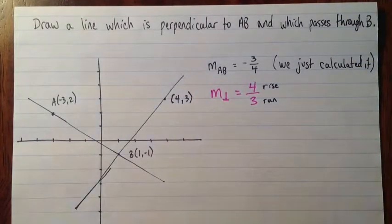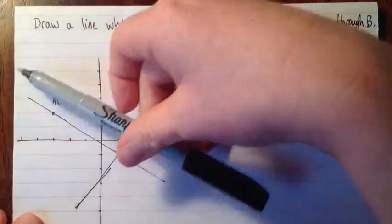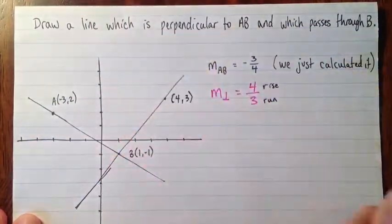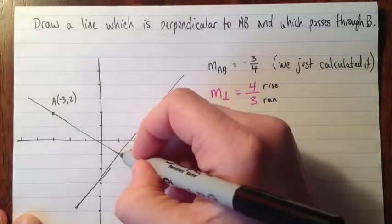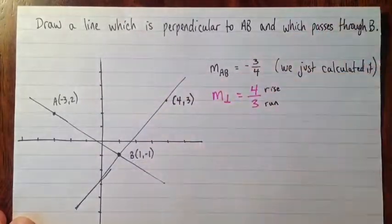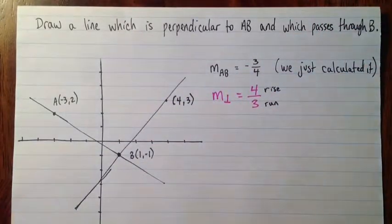All right. So just to review, if you want to draw a line that's parallel or perpendicular to a certain line, you'll find the slope of the first line, and then decide what the slope of the second line should be. It's the same if it's parallel, or the negative reciprocal if it's perpendicular. And then just use that slope, and you'll know at least one point. Use the slope and a point you know to find another point on the line, and then connect them. All right. Good luck.